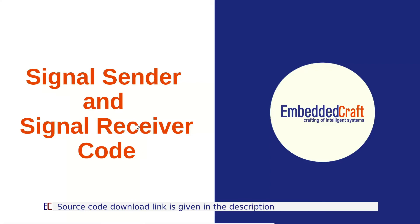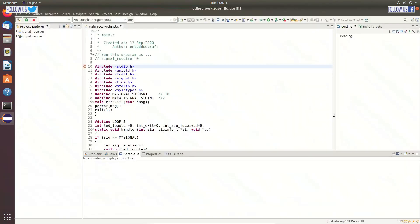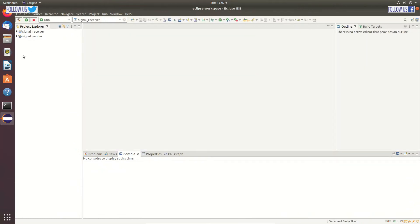Let us see signal sender and signal receiver code. We have used Eclipse IDE for development. Let it open. We will see signal sender and signal receiver code. Here we are having two processes: one is signal sender and another is signal receiver. This is the code in signal sender process.